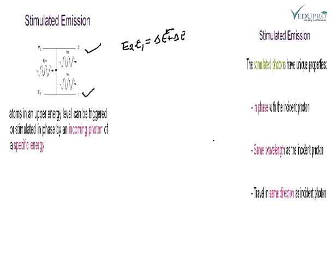पहले photon की energy कितनी थी — delta E — अब दूसरे photon की भी energy इतनी होगी। Now the two photons have the same frequency। अब ये दोनों एक साथ होंगे तो induce करेंगे तो energy बढ़ जाएगी, तो वो एक साथ नीचे आ पाएंगे rapidly। The emitted photon has the same direction of propagation, phase, energy, and state of polarization as the incident photon.